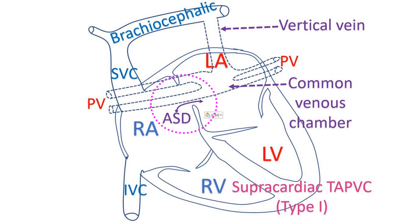Otherwise, the body will not get any oxygenated blood. Oxygenated blood returning from the lungs to the right side of the heart gets pumped back to the lungs. If there is no atrial septal defect, the left ventricle may not get any blood to pump at all. Blood returning from the body to the right side of the heart will also get pumped to the lungs.